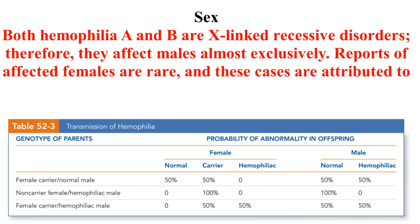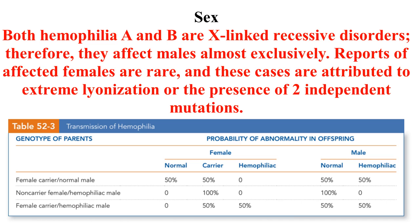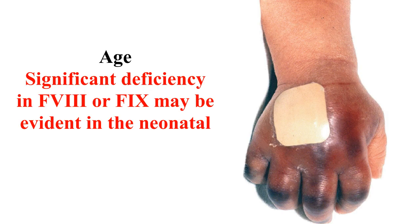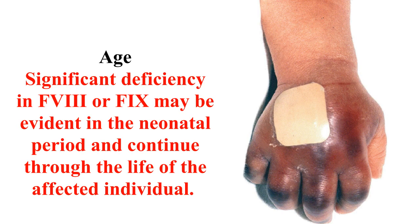Both hemophilia A and B are X-linked recessive disorders; therefore they affect males almost exclusively. Reports of affected females are rare and are attributed to extreme lyonization or the presence of two independent mutations. Significant deficiency in factor 8 or factor 9 may be evident in the neonatal period and continues throughout the life of the affected individual.